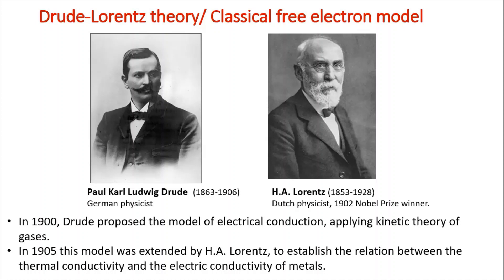In 1900, Drude proposed the model of electrical conduction applying the kinetic theory of gases. Drude was a German physicist who lived between 1863 and 1906. Later in 1905, this model was extended by H.A. Lorentz to establish the relation between thermal conductivity and electrical conductivity of metals. Lorentz was a Dutch physicist who lived between 1853 and 1928, and he was also the Nobel Prize winner of 1902.